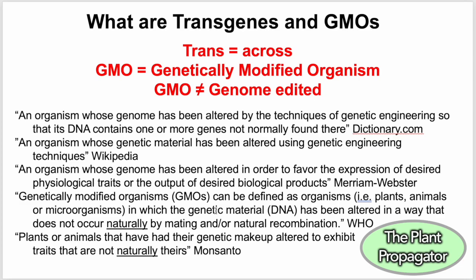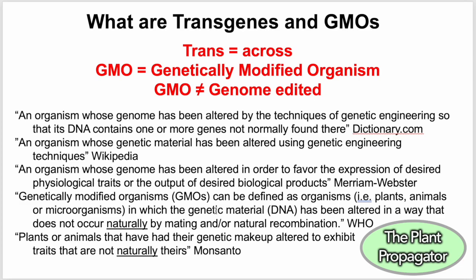Now we need to go into definitions a little bit more and talk about what are transgenes and GMOs — these terms are used a lot in the plant biotechnology area. A transgene: break this word down — 'trans' means across, so it's the process of taking genes from one organism and introducing them into another organism, crossing the genes. This is different from standard breeding. What I'm going to talk about is just transgenic approaches — taking genes and introducing them into organisms that normally those genes wouldn't be associated with.